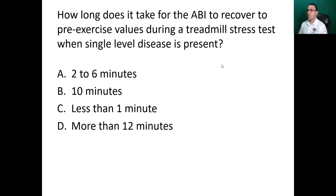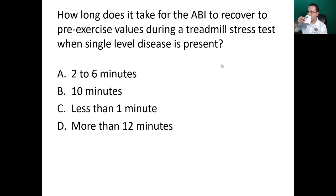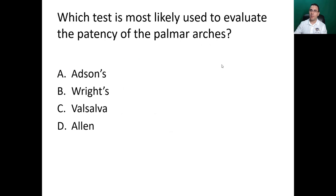How long does it take for the ABI to recover to pre-exercise values during a treadmill stress test when single-level disease is present? The answer is two to six minutes. If it takes longer, it usually indicates multiple-level disease is present.